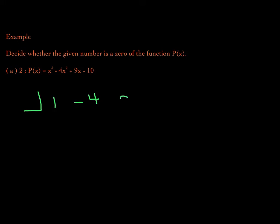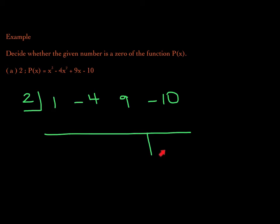There — I have the coefficients of my function. I want to check to see if the number 2 is a zero. We know that this numerical value here will be the remainder, which will also be the function value p(2). In other words, if you plug 2 into your function p, your output — your result — will be the remainder.